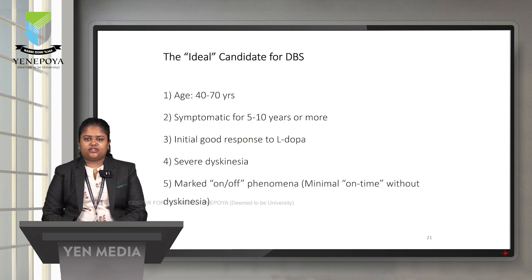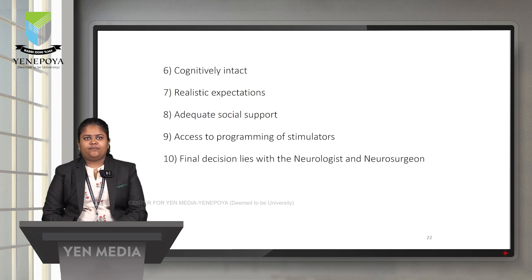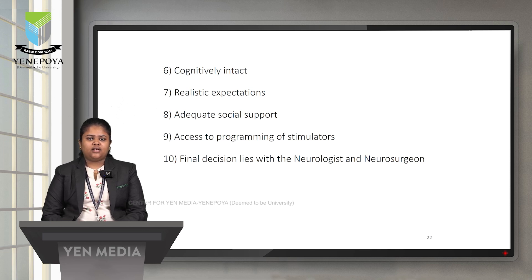The ideal candidate selection for DBS: the patient's age should be between 40 to 70 years, symptomatic for 5 to 10 or more years, with initial good response to levodopa, severe dyskinesia, marked on-off phenomena, and minimal on-time without dyskinesia. The patient should be cognitively intact with realistic expectations, adequate social support, and access to stimulator programming. The final decision lies with the neurologist or neurosurgeon based on the severity of the disease.